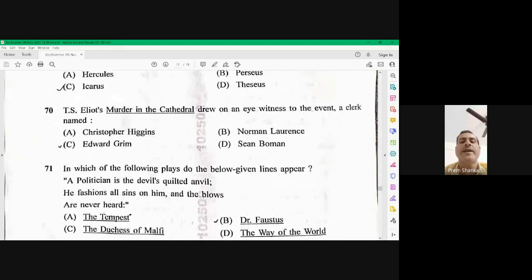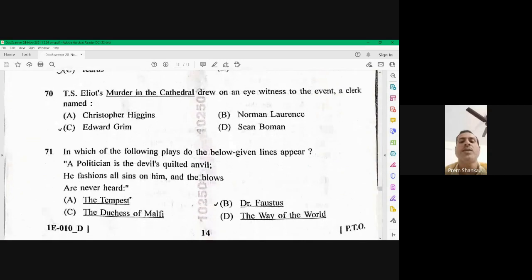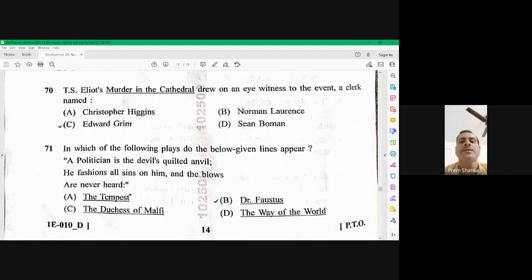Question number 71. Moving on to question number 71. In which of the following plays do the below given line appears? A politician is the devil's squitted anvil. He fashions all sins on him and the blues are never heard. So this line appears in John Repsters, the Duchess of Malfi. C is the right option. 71 is C.